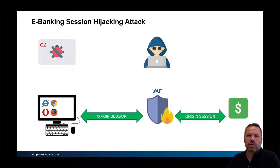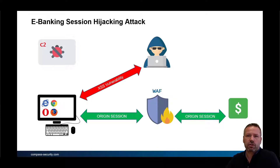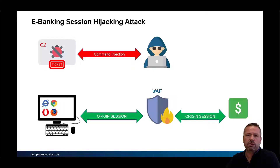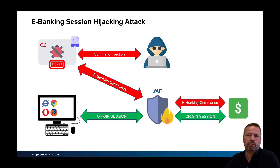In this scenario we have a victim computer that is connected to an e-banking system or any other website. Let's assume this website is prone to the so-called cross-site scripting vulnerability. An attacker is then injecting malicious JavaScript into the browser of a victim. This JavaScript could then exfiltrate the cookies, the session identification to a third-party server, to the so-called C2 server — the command and control server. The attacker is remotely controlling the C2 server, sending a script that is then launching a fraudulent payment on behalf of the victim's user using this ticket.